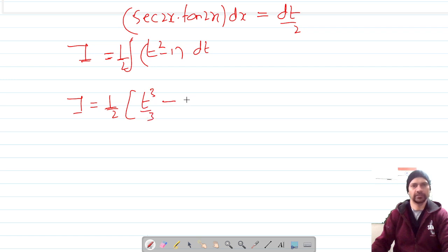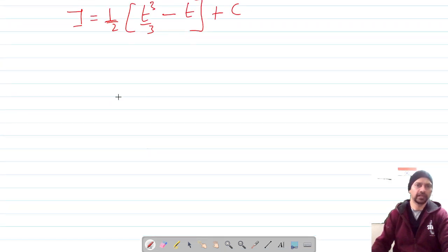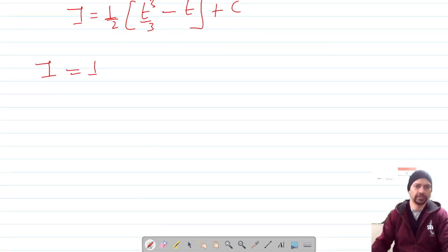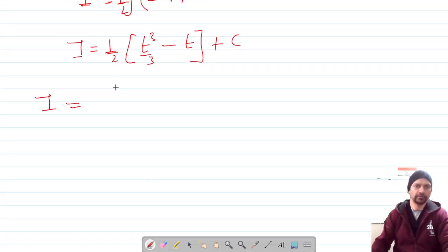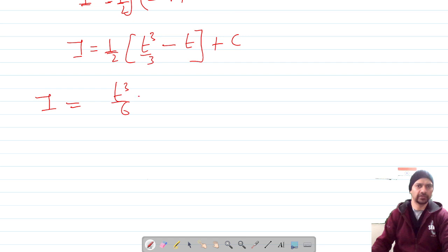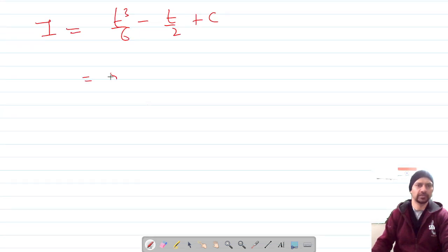And let's substitute the values now. It should be, let me open up the bracket first, it's t³ by 6 minus t by 2 plus c which gives me sec³(2x) by 6 minus sec(2x) by 2.